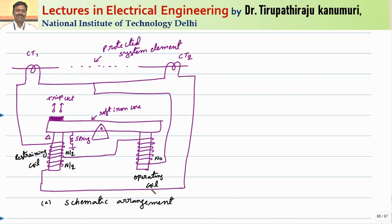The operating coil produces the operating force. The operating coil is connected between the equipotential point of the first CT, and from the operating coil the connection goes to the center point of the restraining coil. The restraining coil is connected across the two CT secondary points. The current from CT1 is I1 and from CT2 is I2.